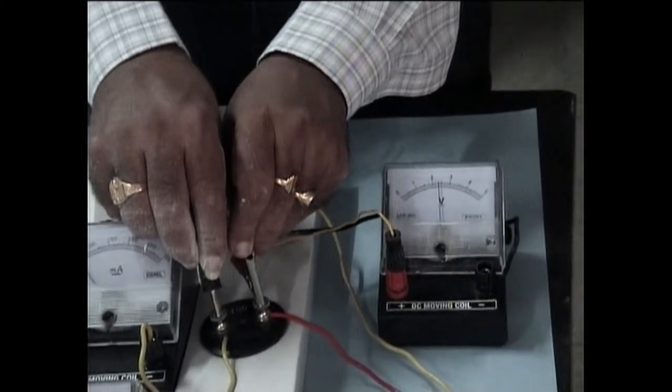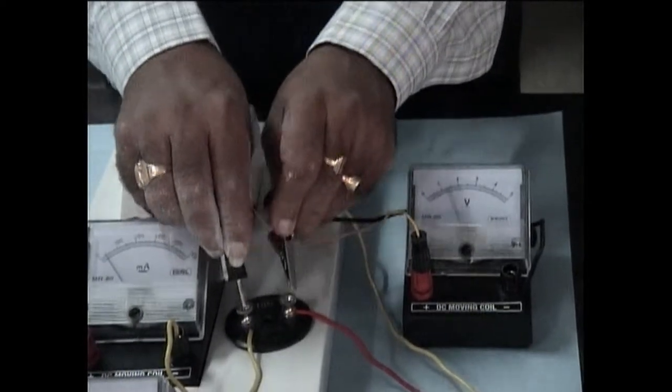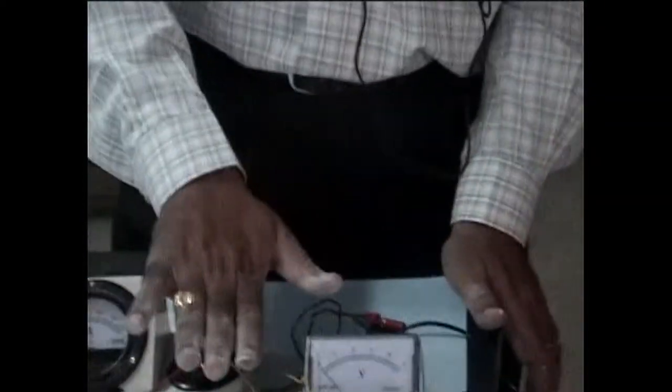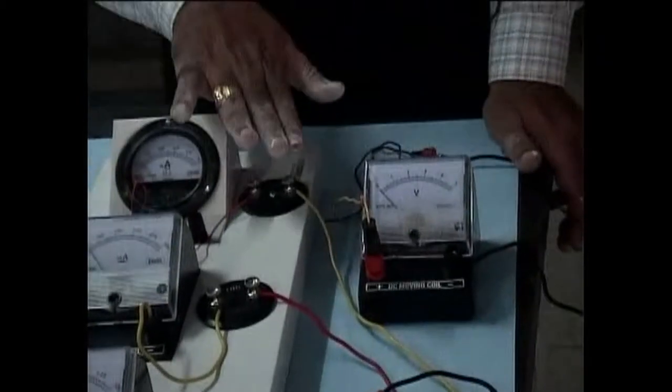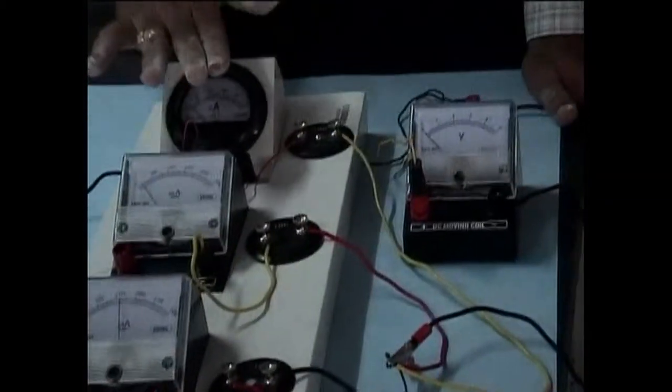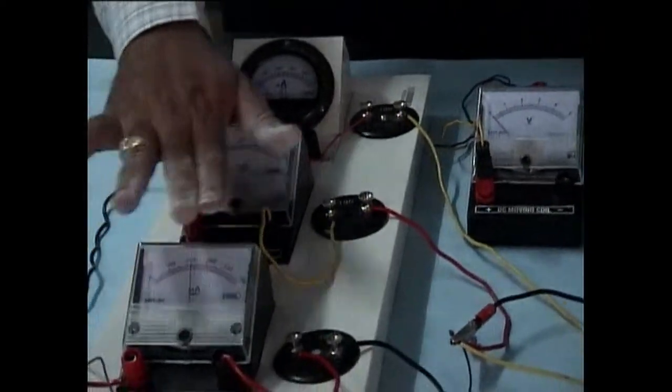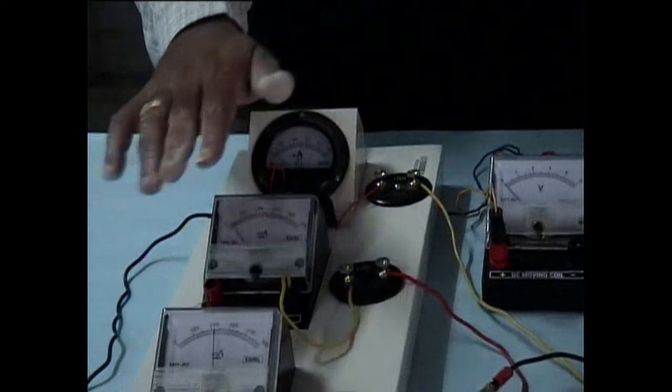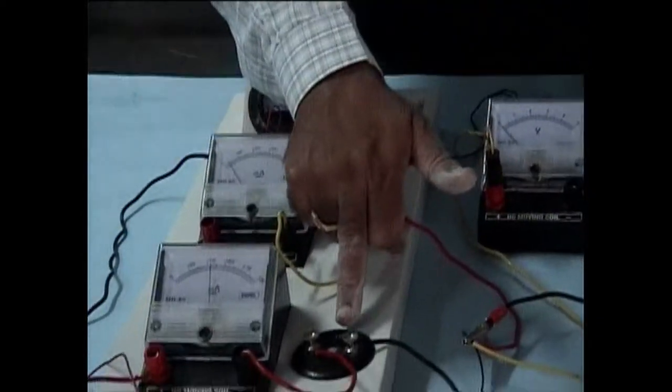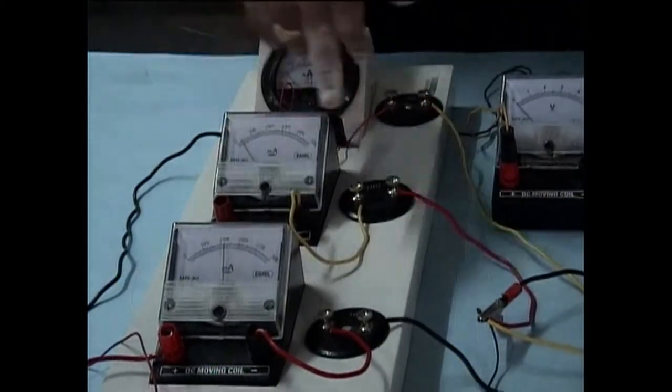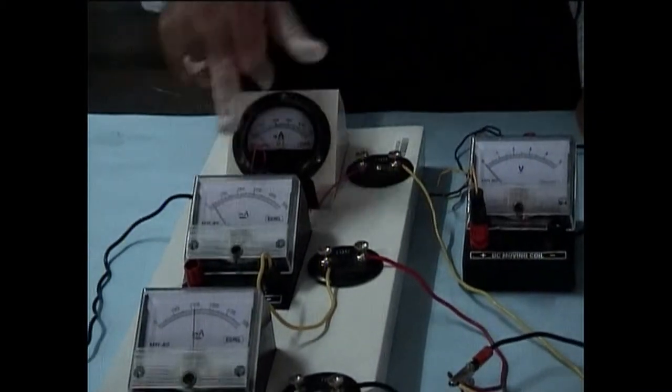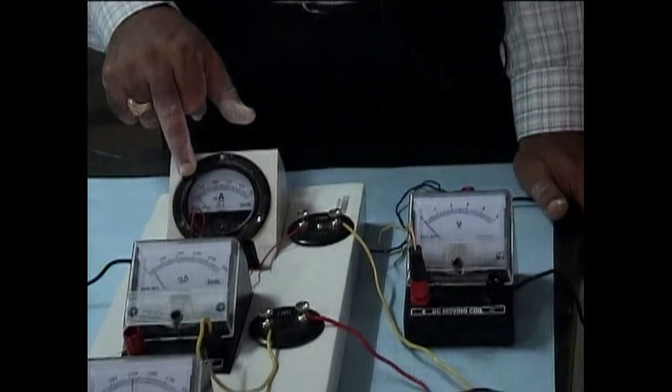So in this way we can prove that the three resistors when they are connected in parallel, the currents would be different. The currents are according to the resistance. Lower is the resistance, more is the current. In this circuit it is 10 ohm, therefore more current. It is 100 ohm, therefore less current. Again it is 100 ohm, again less current.